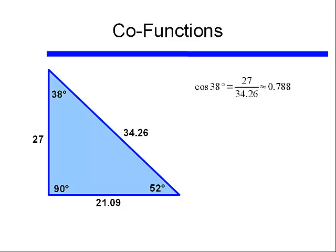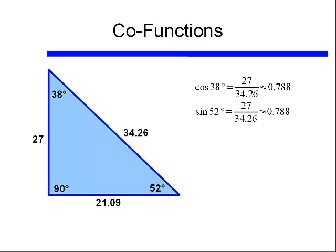If instead of the 38° angle I look at the 52° angle, and instead of cosine I look at the sine — sine of 52 degrees equals the opposite divided by the hypotenuse, which is 27 divided by 34.26. That happens to be the same number. So cosine of 38 degrees is approximately equal to 0.788, and the sine of 52 degrees is also approximately equal to 0.788.